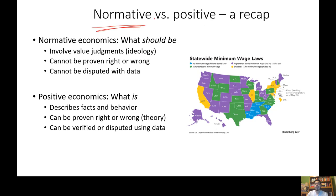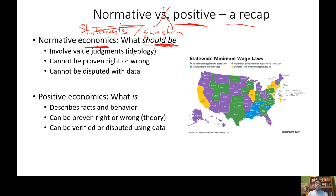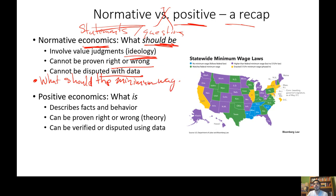The first big concept you need to know is normative versus positive statements. Normative statements describe what should be or ask what should be. They involve value judgments, may be influenced by ideology, and cannot be proven right or wrong — they cannot be disputed with data. An example of a normative question would be: what should the minimum wage be? And a normative statement would be: the minimum wage should be $15 an hour.